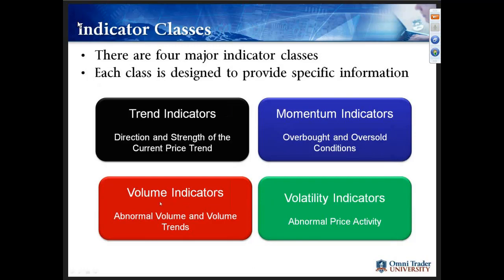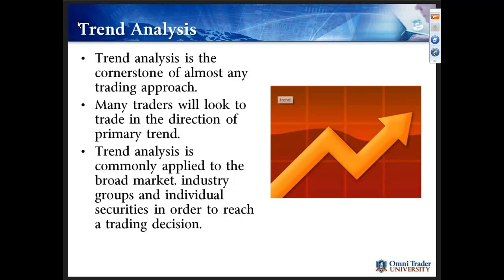Volume and volatility indicators are also commonly used, just not as often as the other two major classes. In this online session though, we'll have the opportunity to look at some volume and volatility indicators, but our emphasis will be on trend and momentum. Trend indicators are basically trying to tell us the direction and strength of the current price trend. The majority of trend indicators look at price only, though some may incorporate volume information as well.